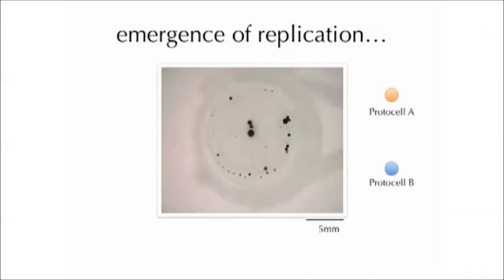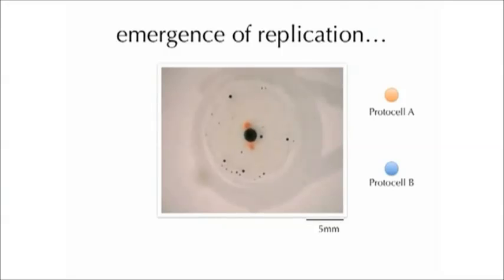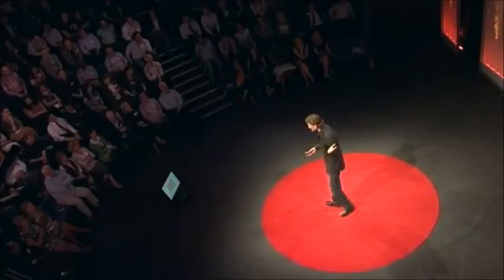I repeated this experiment many times, and one time something very interesting happened. We added these protocells together and protocell A and protocell B fused together to form a hybrid protocell AB — that hadn't happened before. Protocell AB likes to dance around for a bit, but then something even more interesting happens: when two large hybrid protocells fuse together, we now have a dancing protocell and a self-replication event — just with blobs of chemicals. You have a simple system with five chemicals here combining with a simple system of five chemicals, forming something more complex. And you get the emergence of another kind of life-like behavior, which in this case is replication.